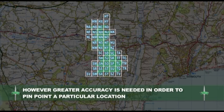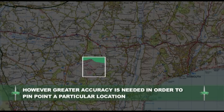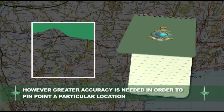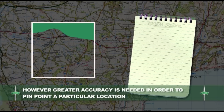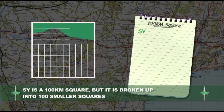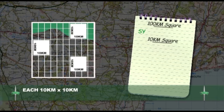However, much greater accuracy is required in order to pinpoint a particular location. SY is 100km², but it is broken up into 100 smaller squares, each 10km by 10km.